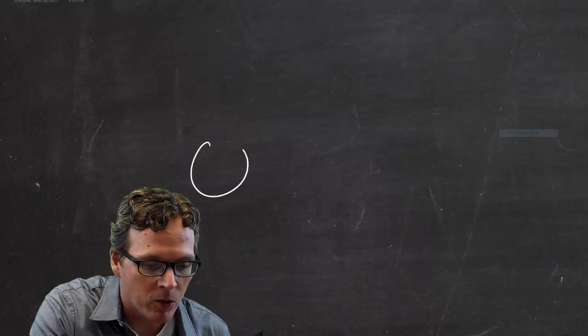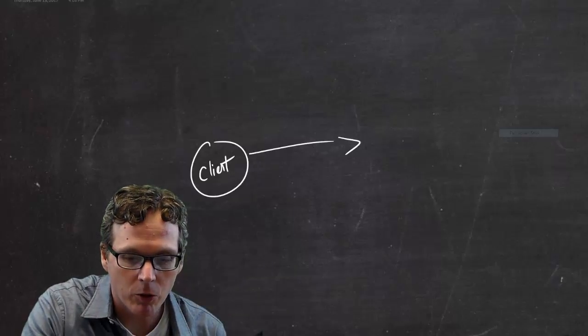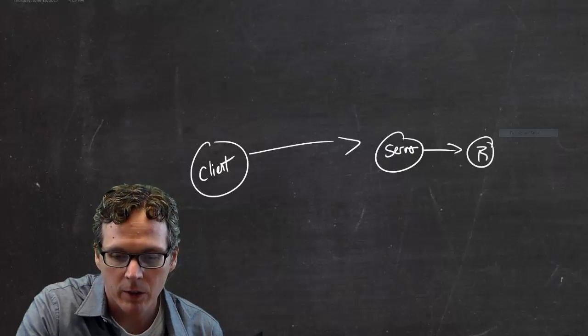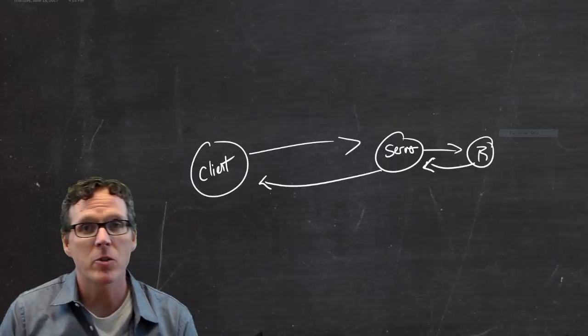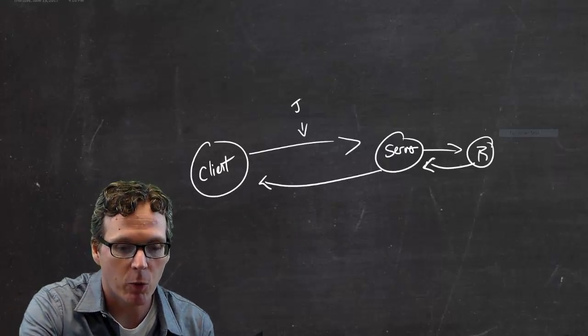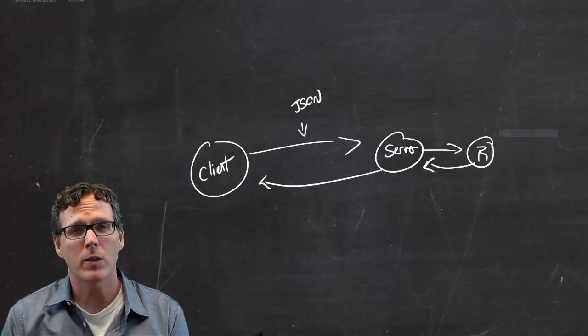So they have some form of client. They want to make a call to a server. They want that server to call R. They want R to return the information to the server and return the information back to the client, and they probably want this data transfer in some standardized format like JSON or something like that. So I think that's roughly the idea of what they were asking.